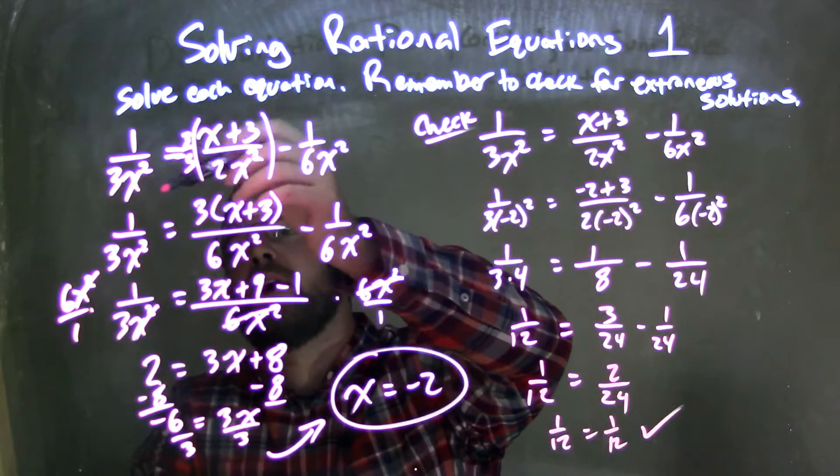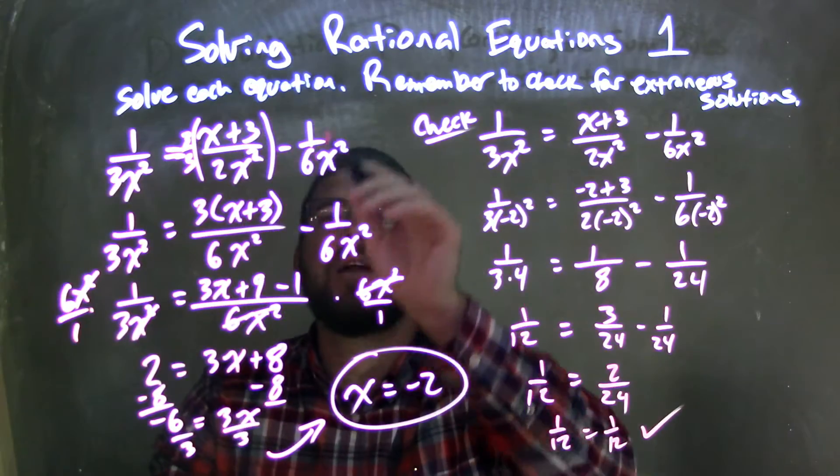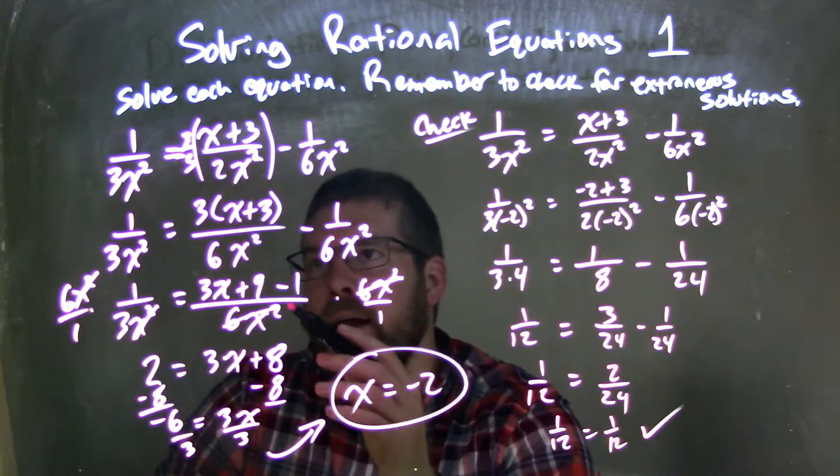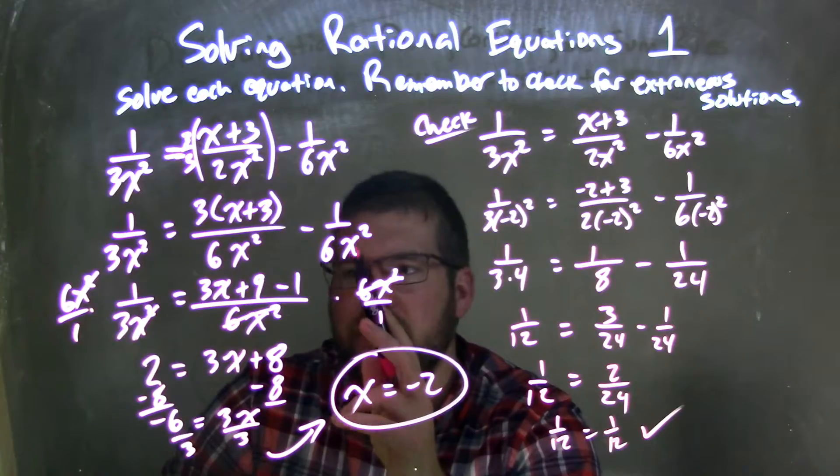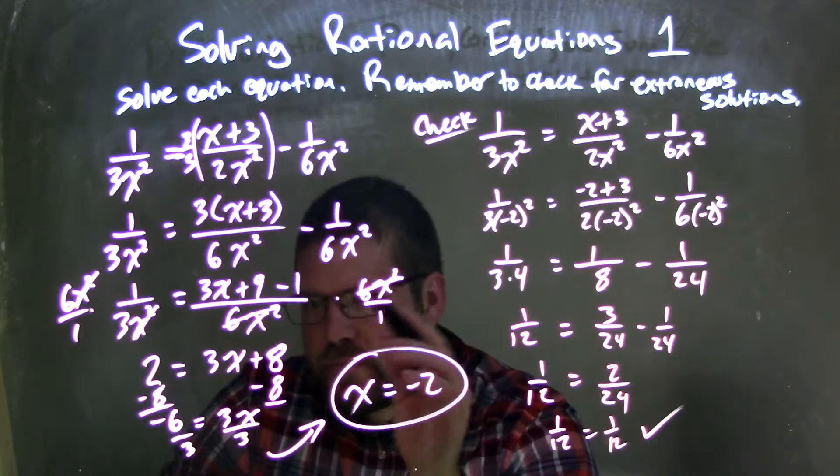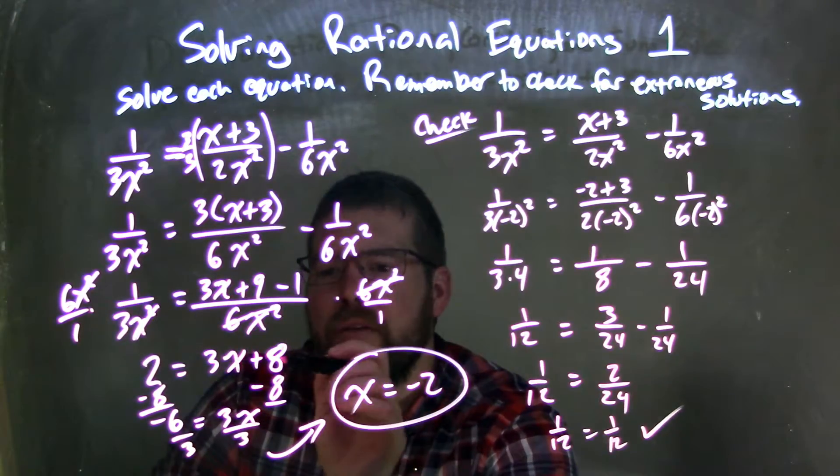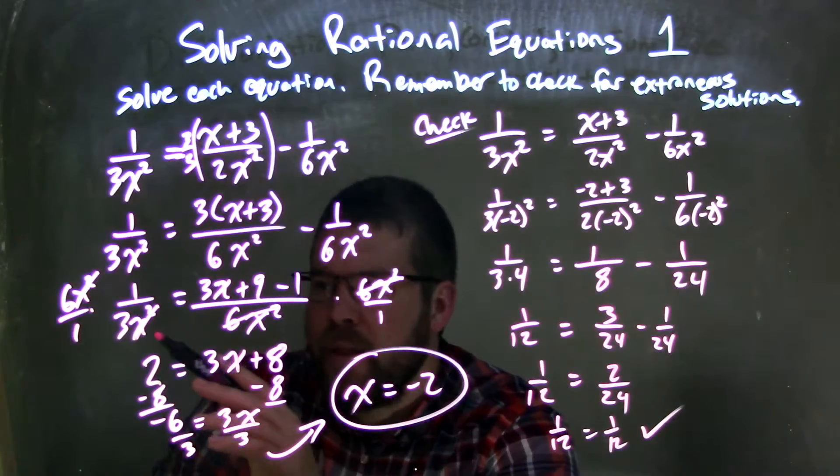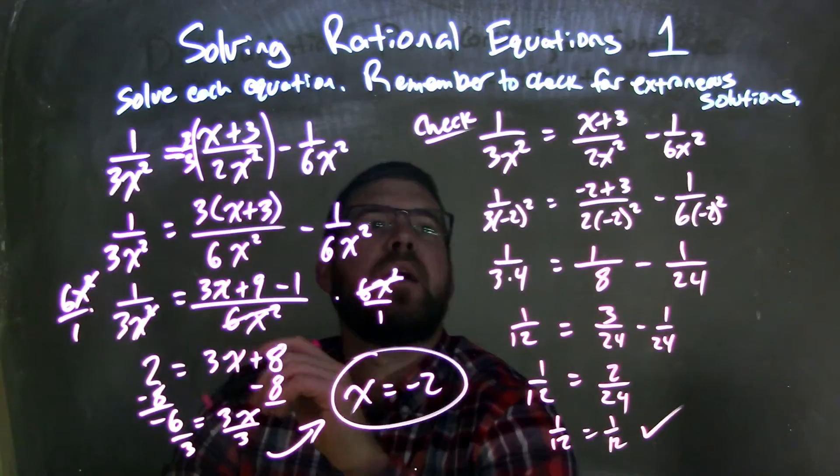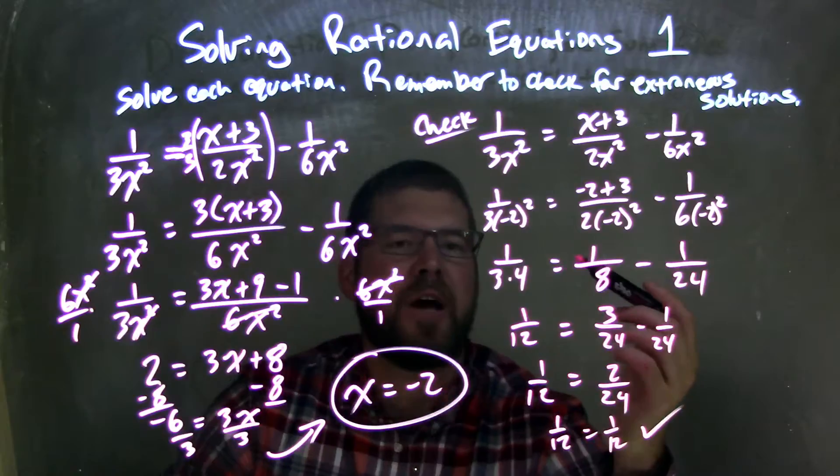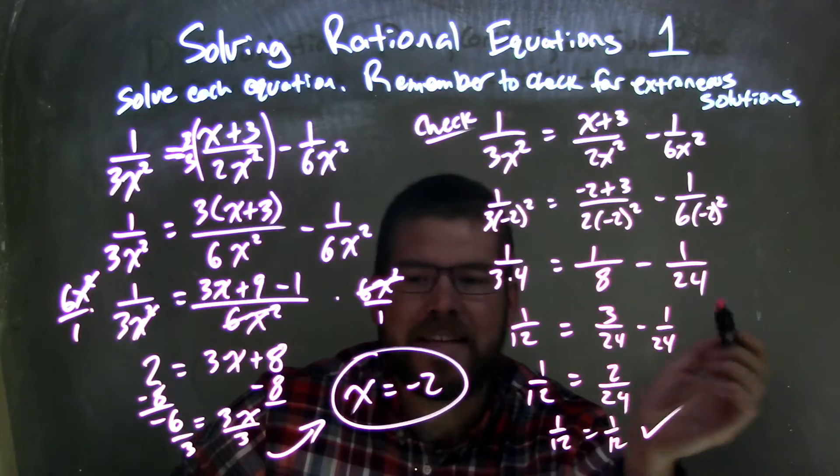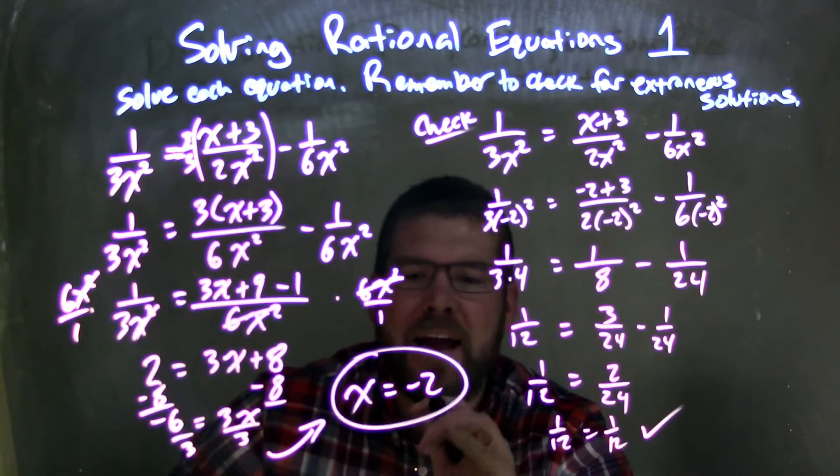So let's recap. We were given 1 over 3x squared equals x plus 3 over 2x squared minus 1 over 6x squared. I rewrote this by multiplying the first fraction on the right-hand side by 3 over 3 to get the same base. Once I had that, I combined the fractions on the right-hand side. Then I multiplied both sides by 6x squared, which left me with 2 equals 3x plus 8. I subtracted 8 from both sides and divided by 3, giving me x equals negative 2. I rewrote my equation, plugged negative 2 back in, and checked. That check confirmed I had 1 over 12 equals 1 over 12, which is true, making my final answer x equals negative 2.